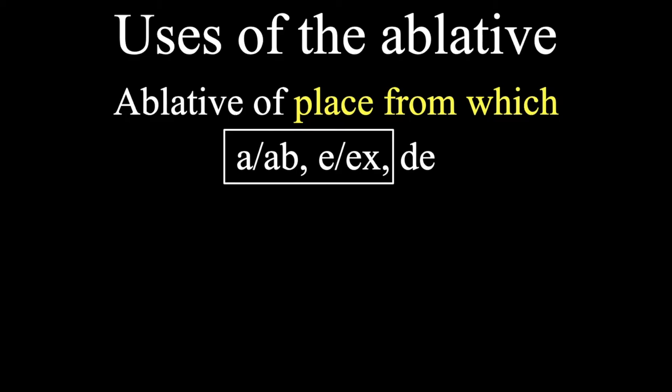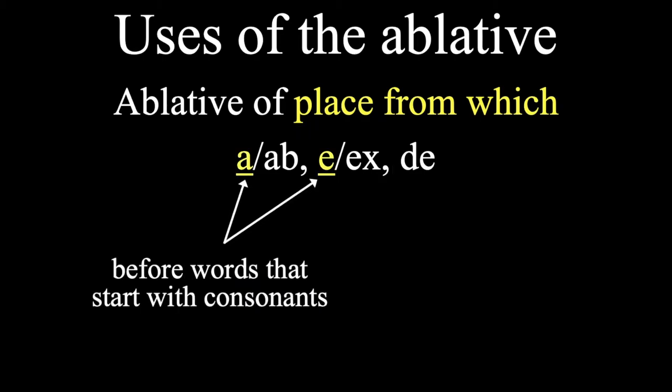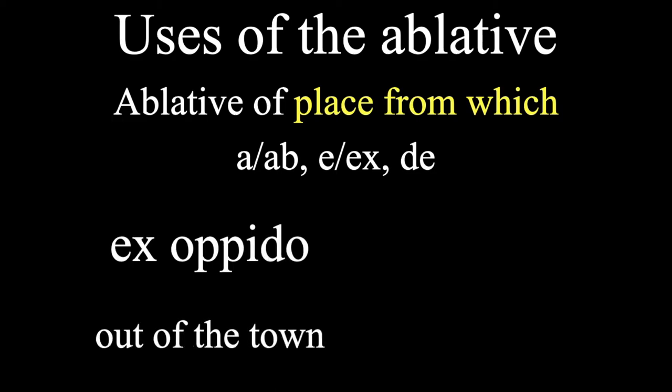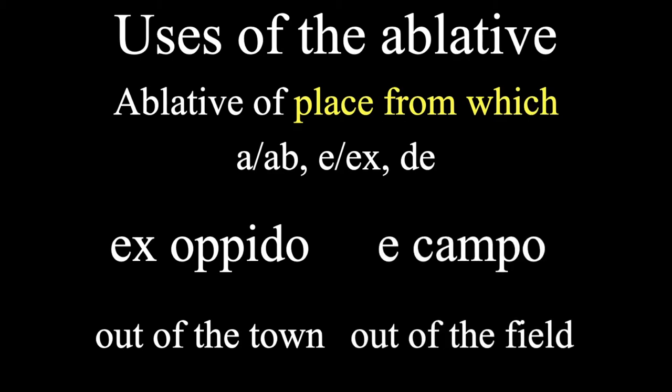And, by the way, a and ab, e and x have multiple forms that you can see here. They work like the words a and an in English, in that you use an a or an e before words that start with consonants, whereas you use ab and x before words that start with vowels. So, we would see ex alpido, for out of the town, because alpido starts with a vowel, whereas we would see e campo, for out of the field, because campo starts with a consonant.